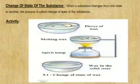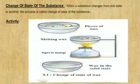Now let's know about change of state of the substance. To understand this, let's do some activity. Take a piece of wax in a bowl and heat it on a candle or spirit lamp. Now observe the changes. How does the piece of wax change? What was the initial state of wax? What did it get converted into? Now keep the same bowl in cold water and observe what happens. From this, we can find out that when the substance changes from one state to another, the process is called change of state of the substance.